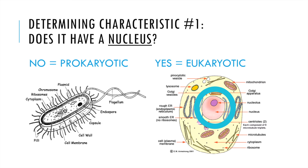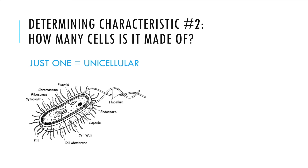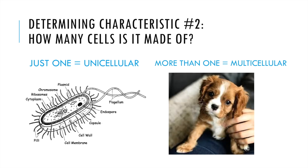The next characteristic we look at is how many cells an organism is made of. If the organism is only made out of one cell, it is unicellular — remember, the prefix 'uni' means one, just like unibrow or unicycle. If the organism is made out of more than one cell, it's called multicellular. A quick tip: if you can see an organism without a microscope, it is multicellular.